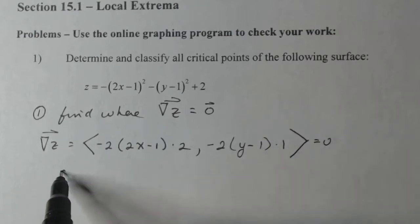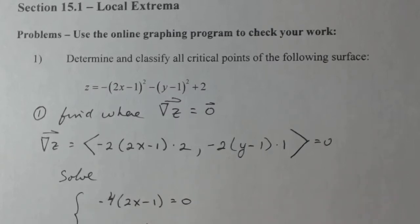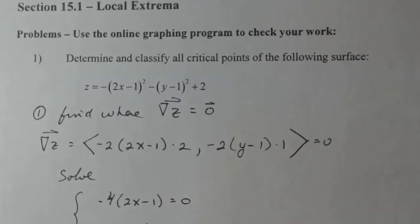So really, if I want to figure out where my gradient equals zero, that means I have to solve the system. Minus four (2x - 1) equals zero, and minus two (y - 1) equals zero. So this is what I have to solve, the system. Now in this case, the system is pretty easy, because each one is in terms of one variable.